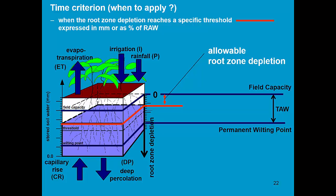The first one is when the root zone depletion reaches a specific threshold, which is given by the red line. So when the water content drops below that threshold, water will be applied. Now that threshold can be expressed in millimeters, when 50 mm of water has depleted out of the root zone, or you can express it also as a fraction of rho.